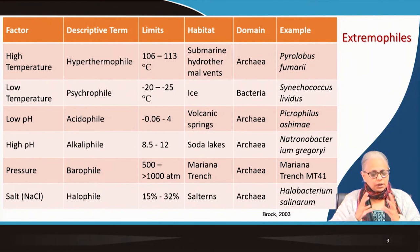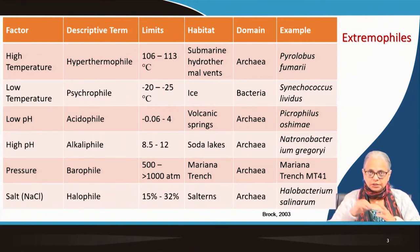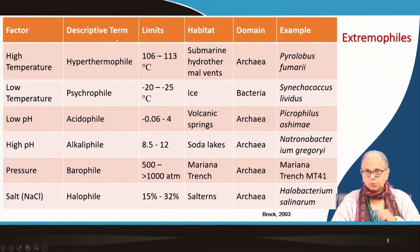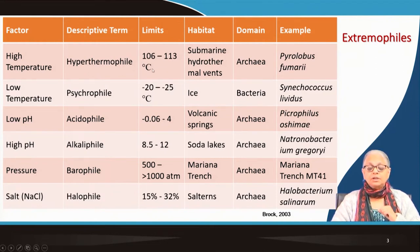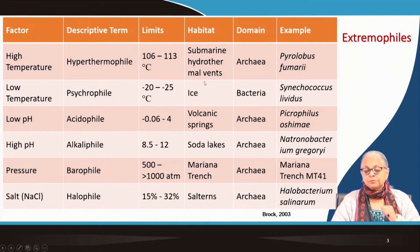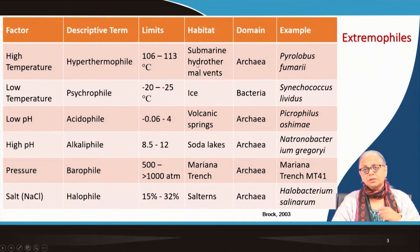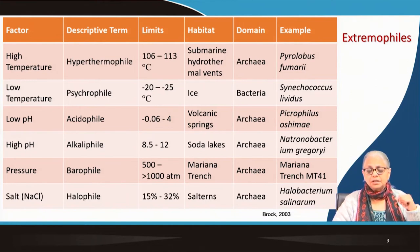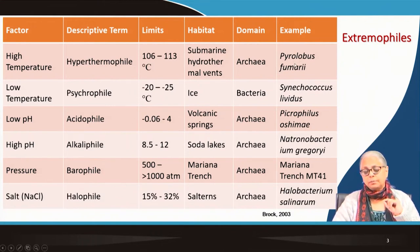Extremophiles are a very interesting group of bacteria, so it's important to recognize that they exist in very harsh conditions where we would normally imagine no life can exist. At very high temperatures, we have a group called hyperthermophilic bacteria, or hyperthermophiles, capable of living within a temperature range of 106 to 113 degrees centigrade. Their habitat can be hot water springs, boiling water springs, or submarine hydrothermal vents — hot gases coming from the depth of the earth in marine environments. One particular example is Pyrrolobus fumarii.